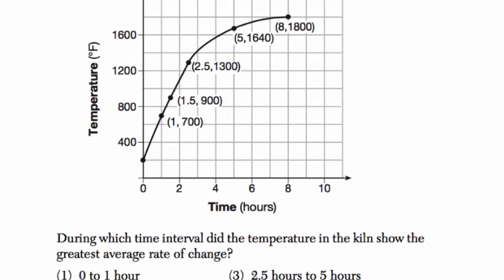During which time interval did the temperature in the kiln show the greatest average rate of change? So I see greatest average rate of change. I'm going to make a comment to myself here. They're asking us which section has the greatest slope or the steepest slope. And it's really hard to tell. I mean you can't tell visually.